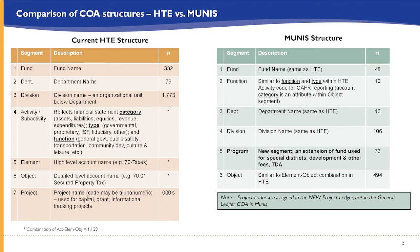In the new structure we have about five funds that have programs associated with them. So when the council goes to approve budget appropriations, what will look a little different the first time we do a budget in Munis is that you'll be approving appropriations for 48 funds plus 73 programs. Think of it just as an extension of the fund.